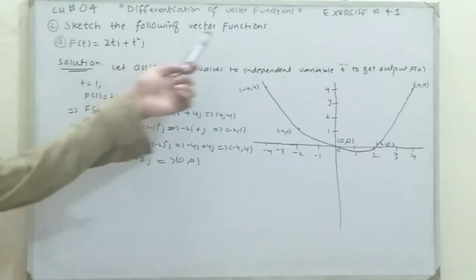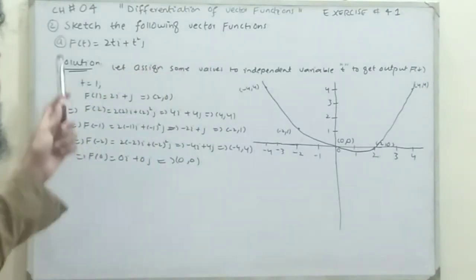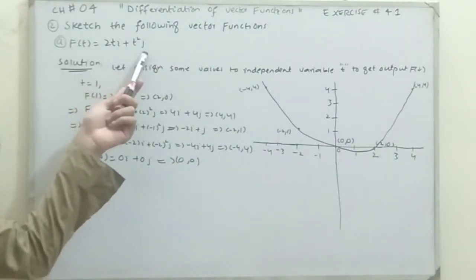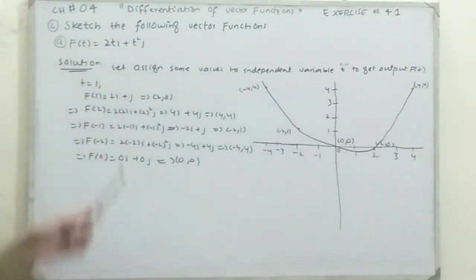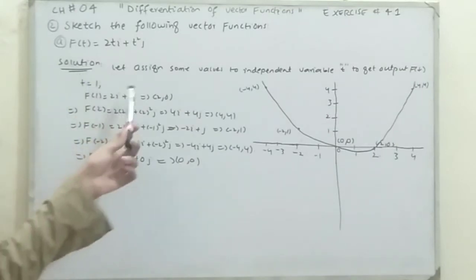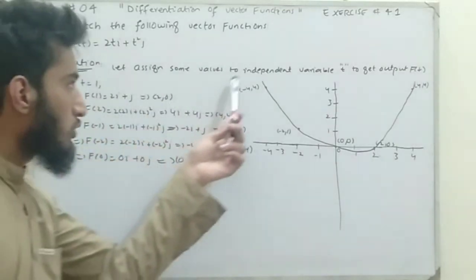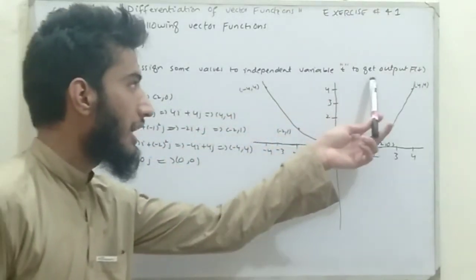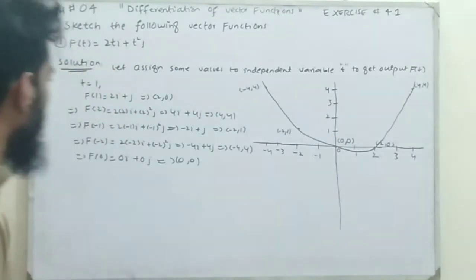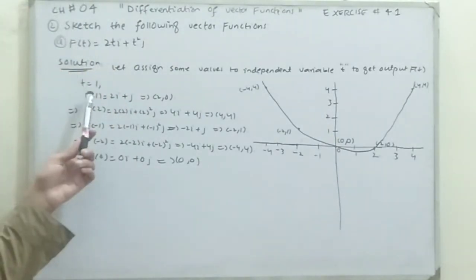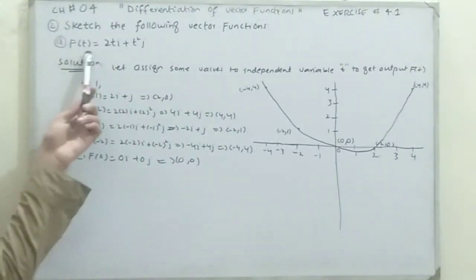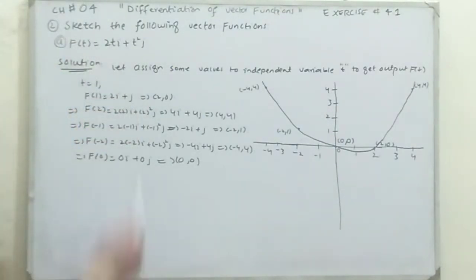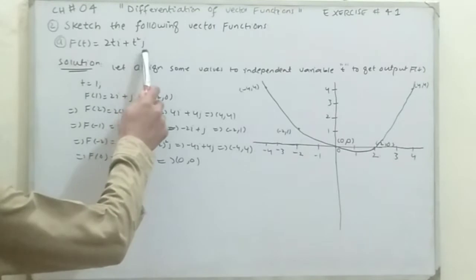Sketch the following vector function. Part a: F(t) = 2t·i + t²·j. Solution: Let's assign some values to the independent variable t to get the output range F(t). Our function is F(t) = 2t·i + t²·j.